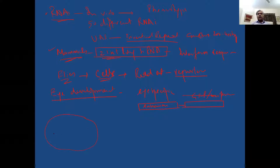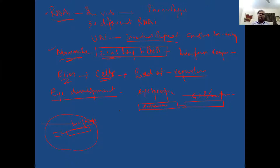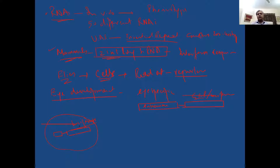We have our reporter in cells — a luciferase reporter, which has been extensively used because it can be quantified using high-throughput methods. GFP can also be used but can only be visualized; we cannot quantify things as precisely as we can with luciferase.